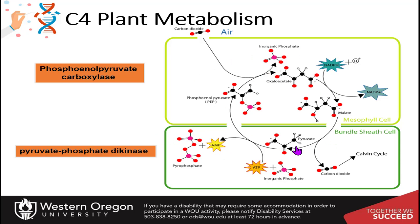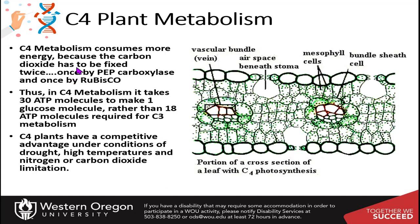This whole evolutionary pathway has been developed in C4 types of plants. Overall, C4 metabolism consumes more energy because carbon dioxide is fixed twice — first by PEP carboxylase to make oxaloacetate, and then released and fixed again by Rubisco. In C4 metabolism, it takes 30 ATP molecules to make one glucose molecule, rather than the 18 ATP required for C3 metabolism. C4 plants have a competitive advantage under conditions of drought, high temperatures, and nitrogen or CO2 limitation, but can't compete in moderate temperate areas with C3 plants due to this higher energy demand.